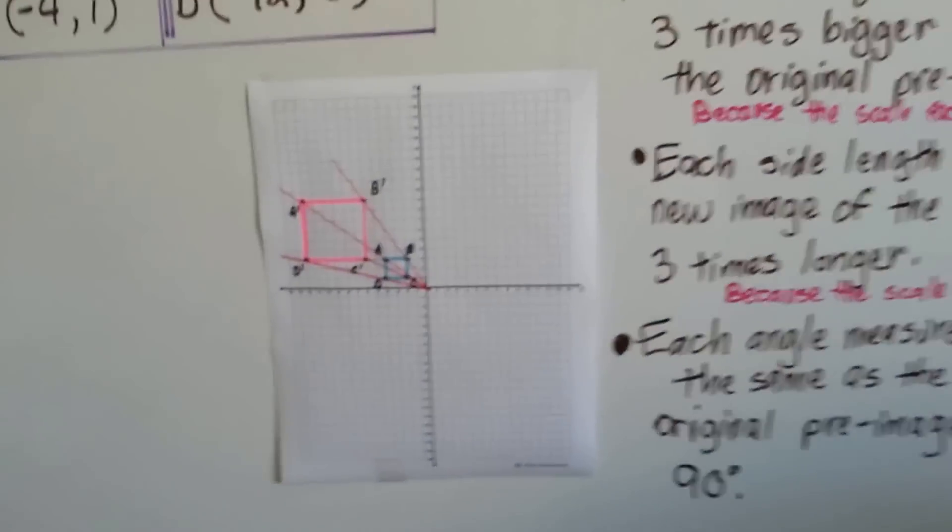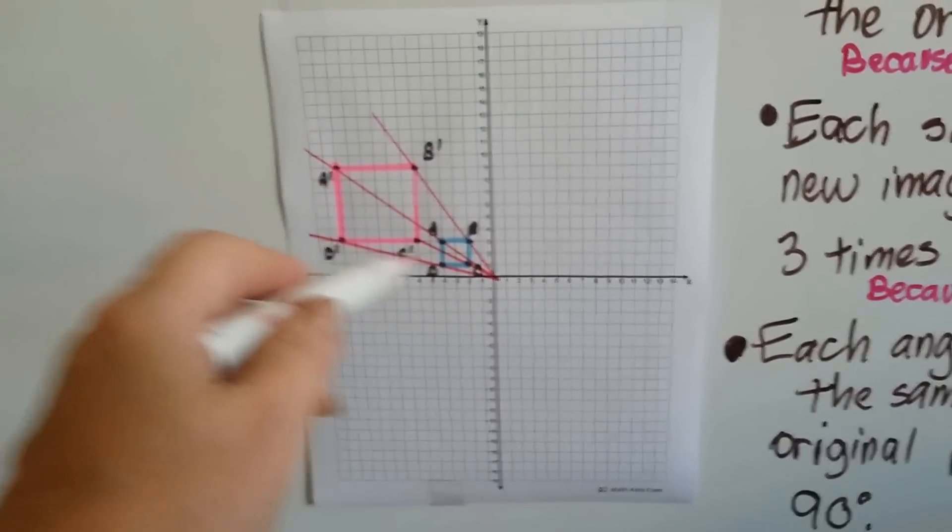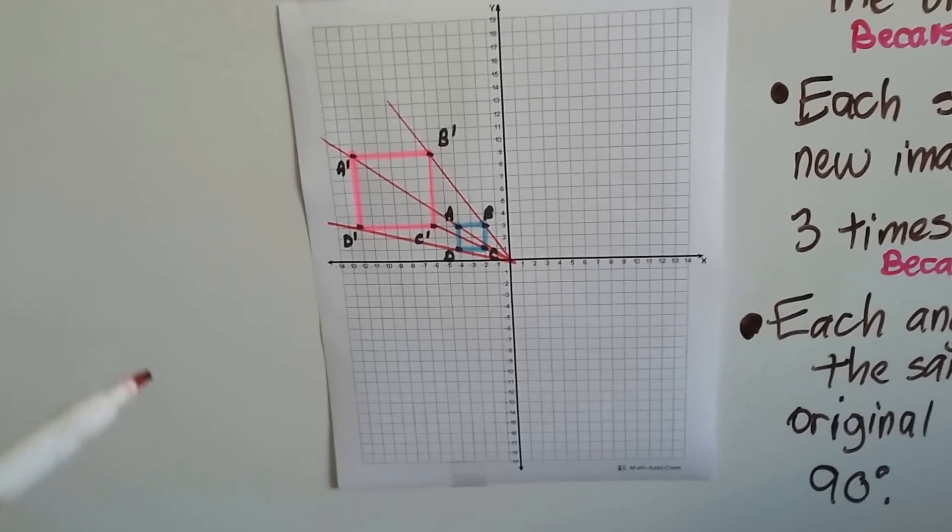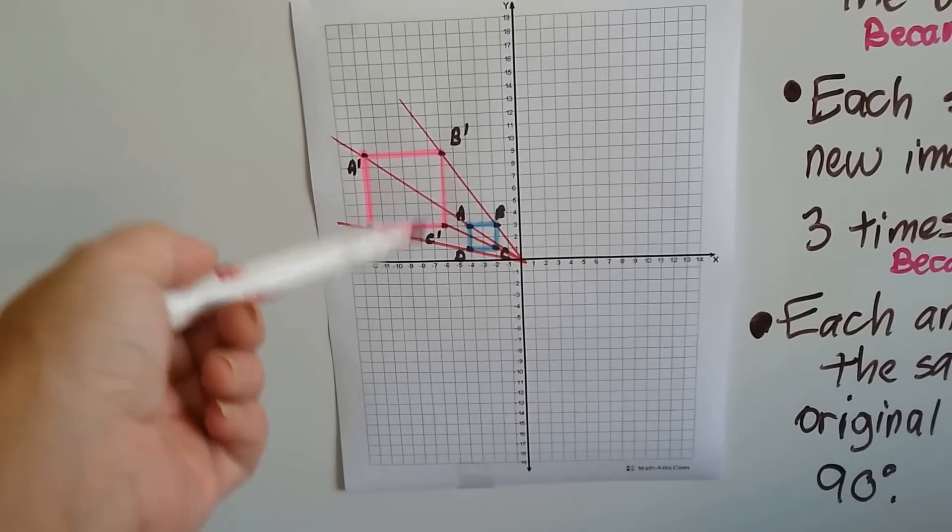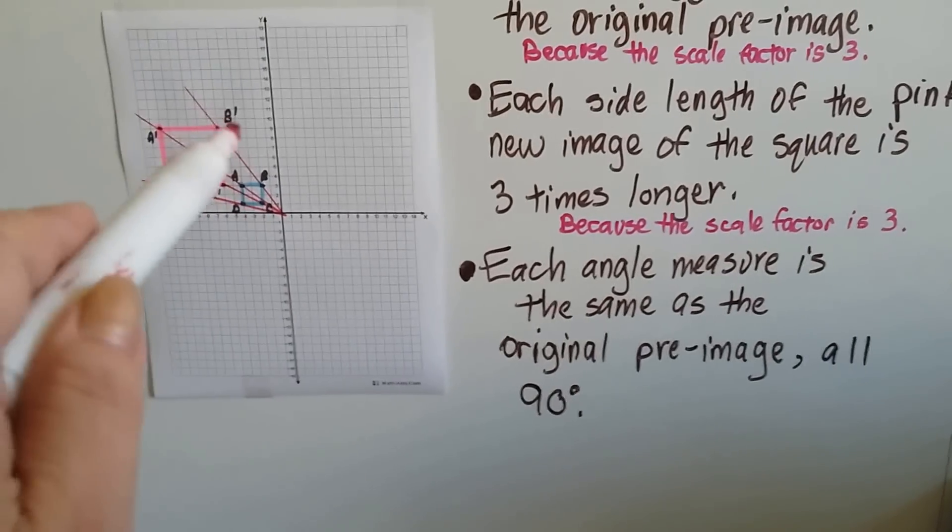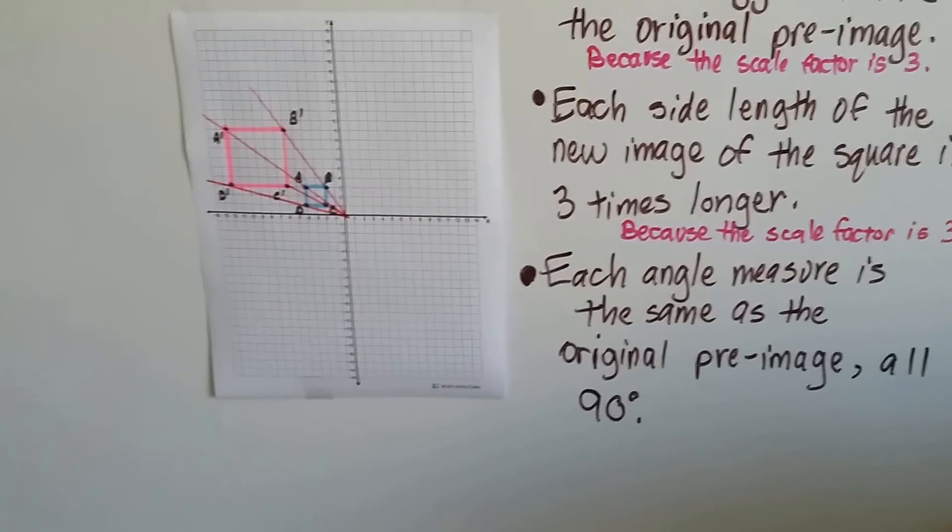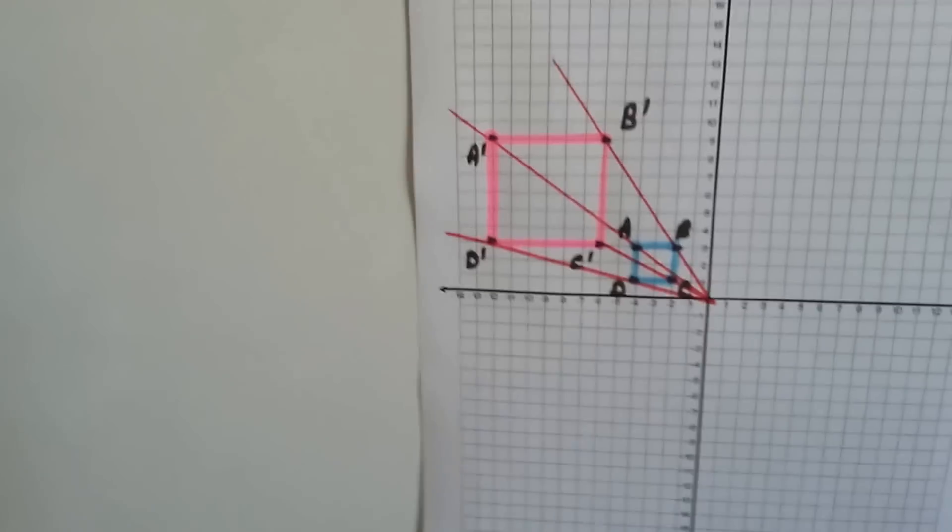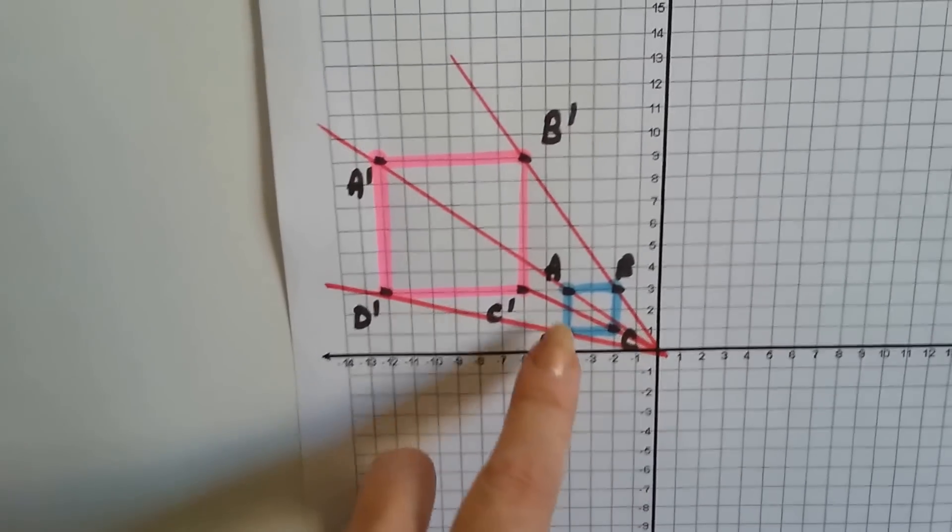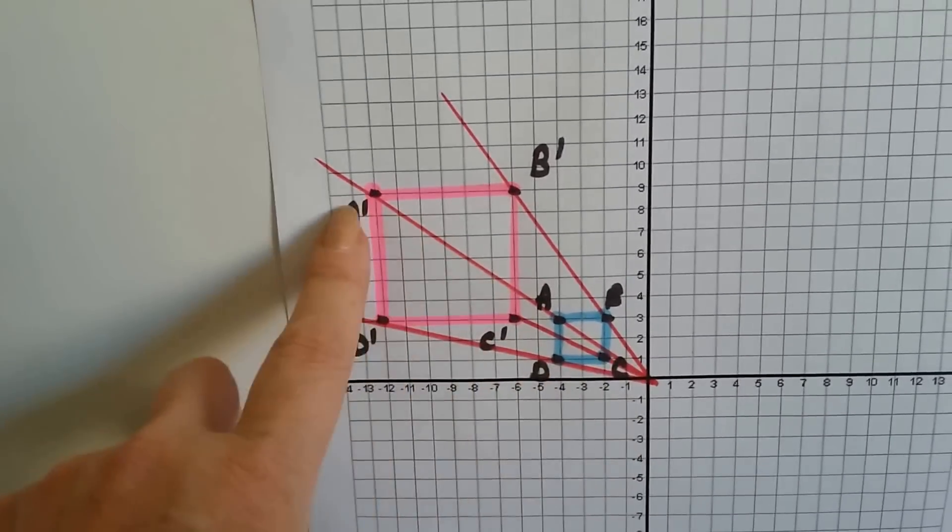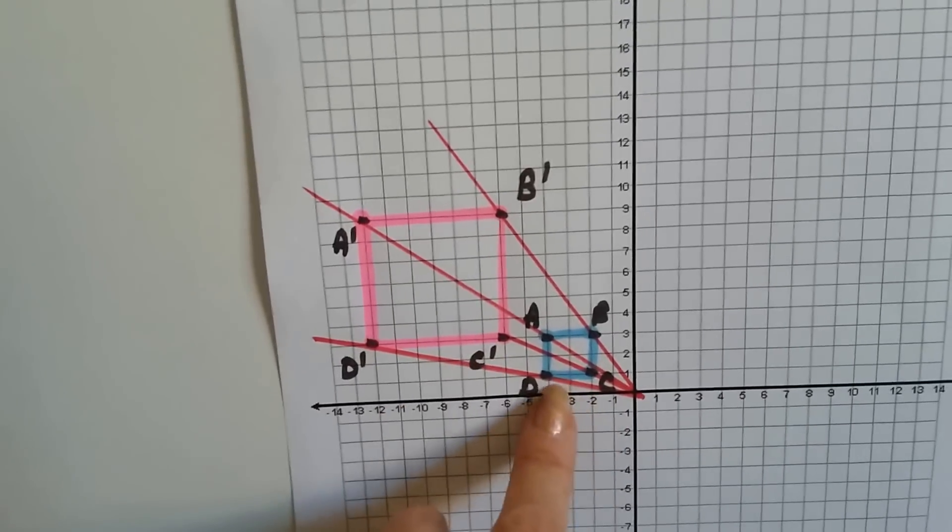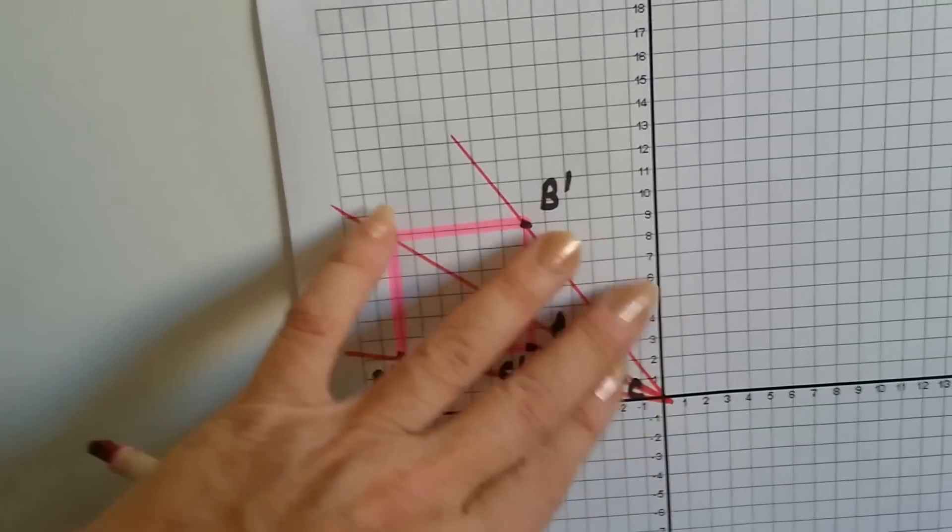So we've sketched it, and the new image, the pink one, is 3 times bigger than the blue one, than the original pre-image, because the scale factor is 3. Each side length of the pink new image of the square is 3 times longer than the blue one. Each angle measure is the same as the original pre-image, they're all 90 degrees, but the size is completely different. It's 3 times bigger. And we can see that the origin is the center of dilation, and our points are connected. A is connected to A', B is connected to B', C is connected to C', and D is connected to D'. And we can see how it slowly got larger.